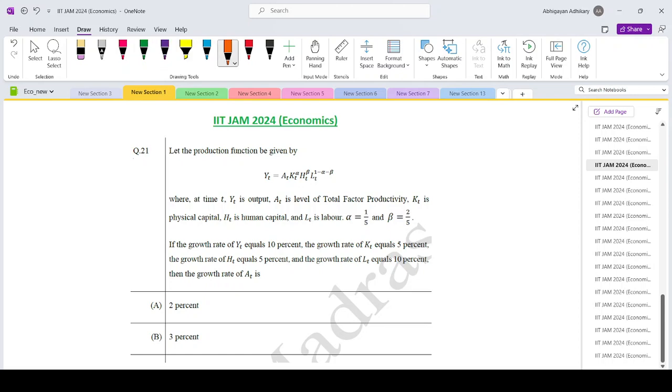Question number 21: Let the production function be given by y_t equals a_t times k_t to the power alpha times h_t to the power beta times l_t to the power 1 minus alpha minus beta, where a_t is the level of total factor productivity.